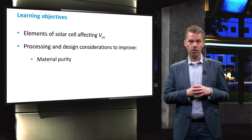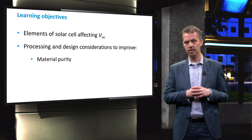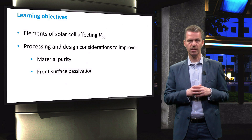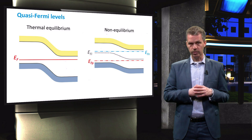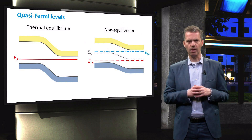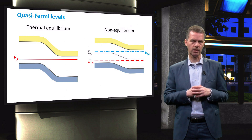We will discuss how certain processing techniques and design considerations can improve the crystalline silicon material purity and how the front surface of the solar cell is passivated. Before we discuss how to influence the open circuit voltage, we first need to have some understanding of which physical processes determine the open circuit voltage.